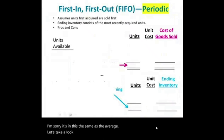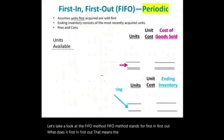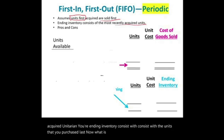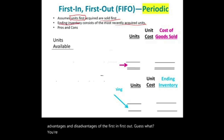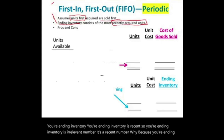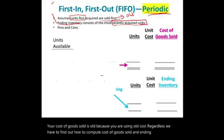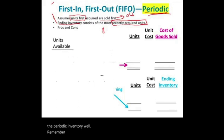Now let's look at the FIFO method — first in, first out. It assumes the units purchased first are sold first, and ending inventory consists of the most recently acquired units. Under periodic FIFO: we sold 8,000 units. Starting from the first inventory, we sell the 5,000 from beginning inventory, then 1,000 from January 10th (that's 6,000), then 2,000 of the 3,000 from April 22nd — totaling 8,000 sold. What's left: 1,000 units from April 22nd and 3,000 from November 15th, equaling 4,000 units remaining. All 12,000 units are accounted for.